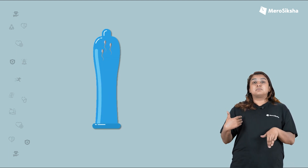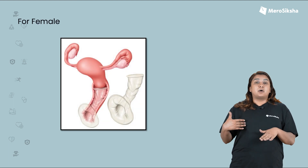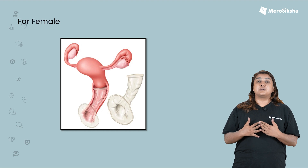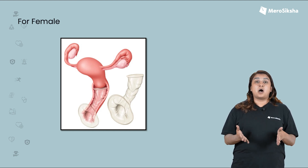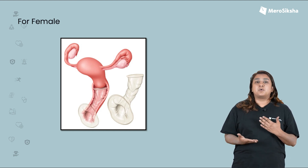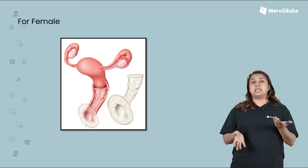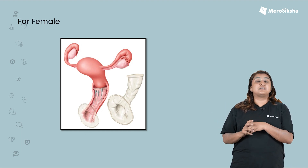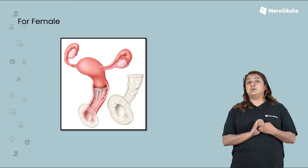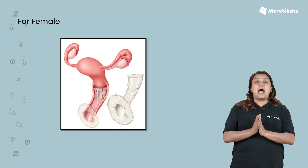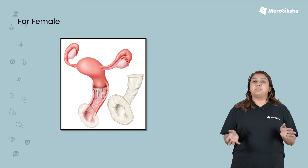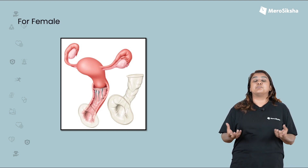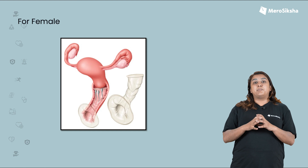With the female condom, during sexual intercourse, it prevents semen from reaching the uterus. This creates a barrier or separation between sperm and the ovary, preventing fertilization and acting as a birth control method.